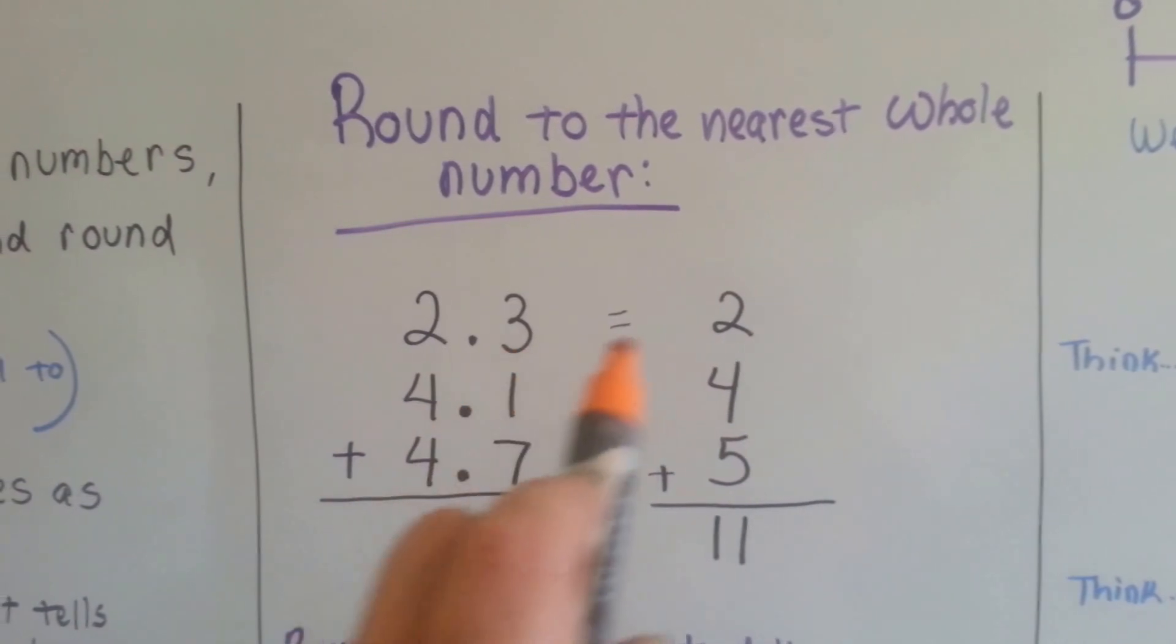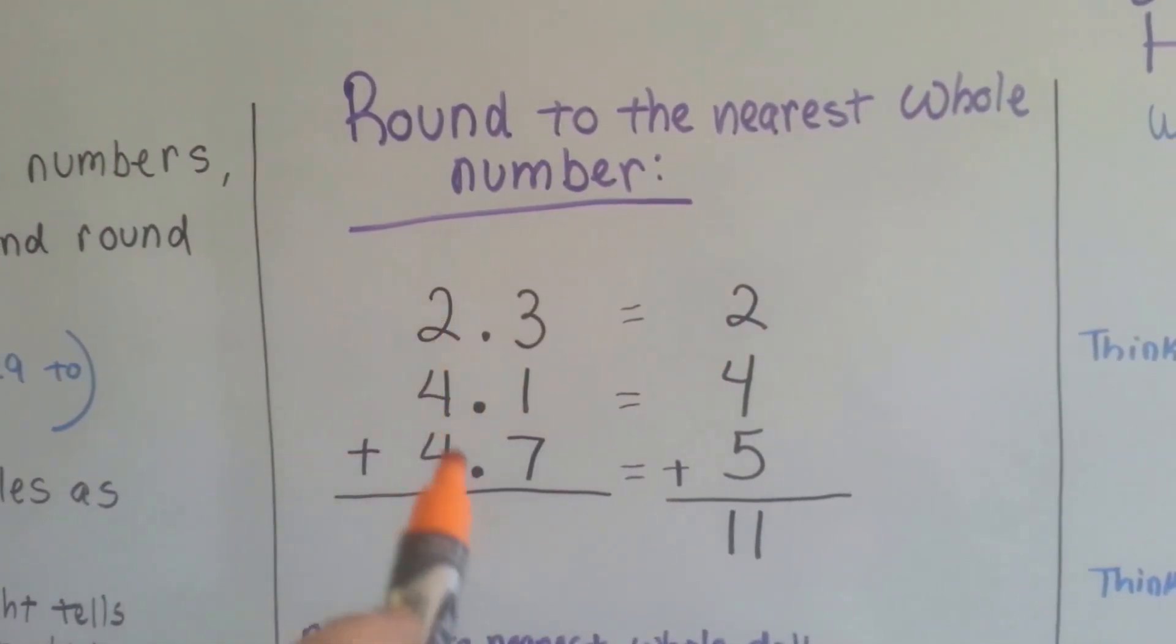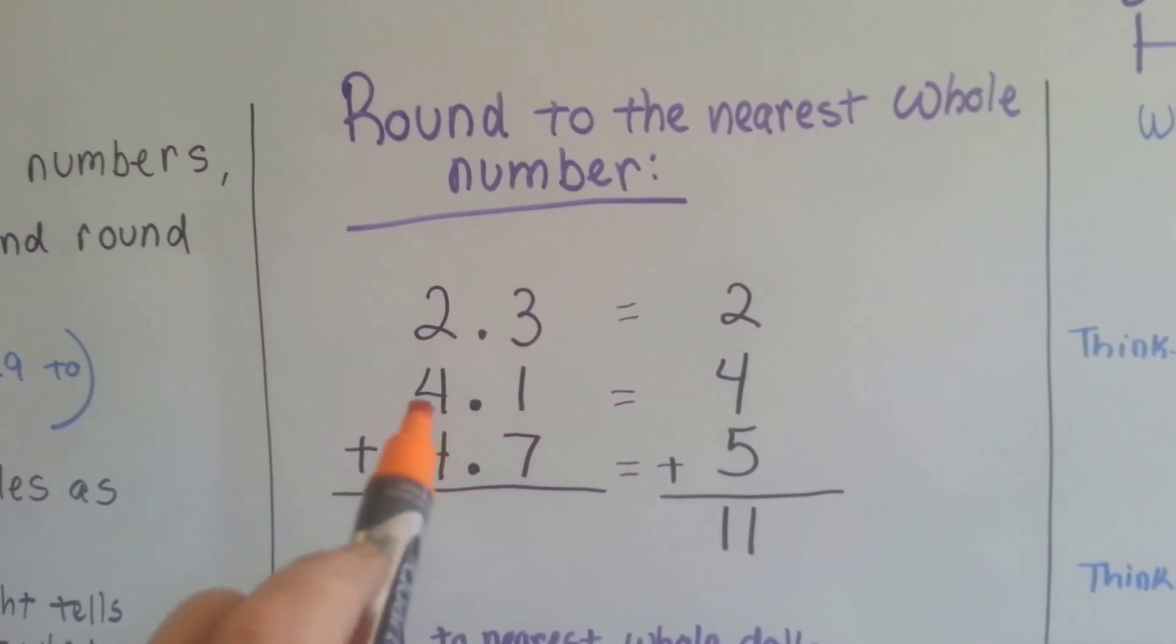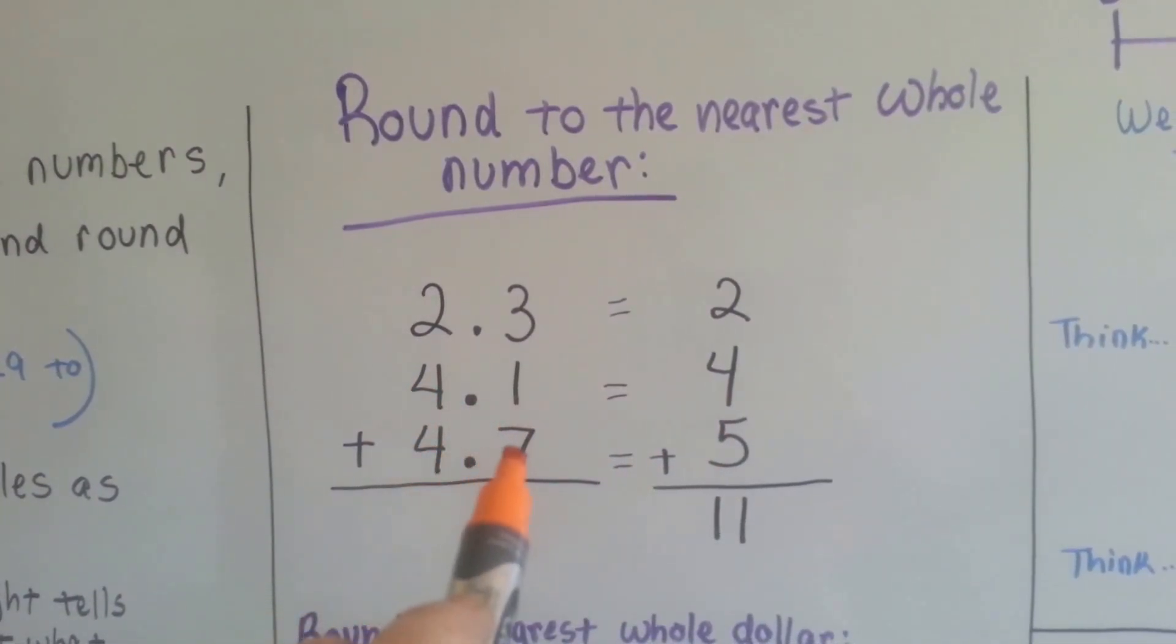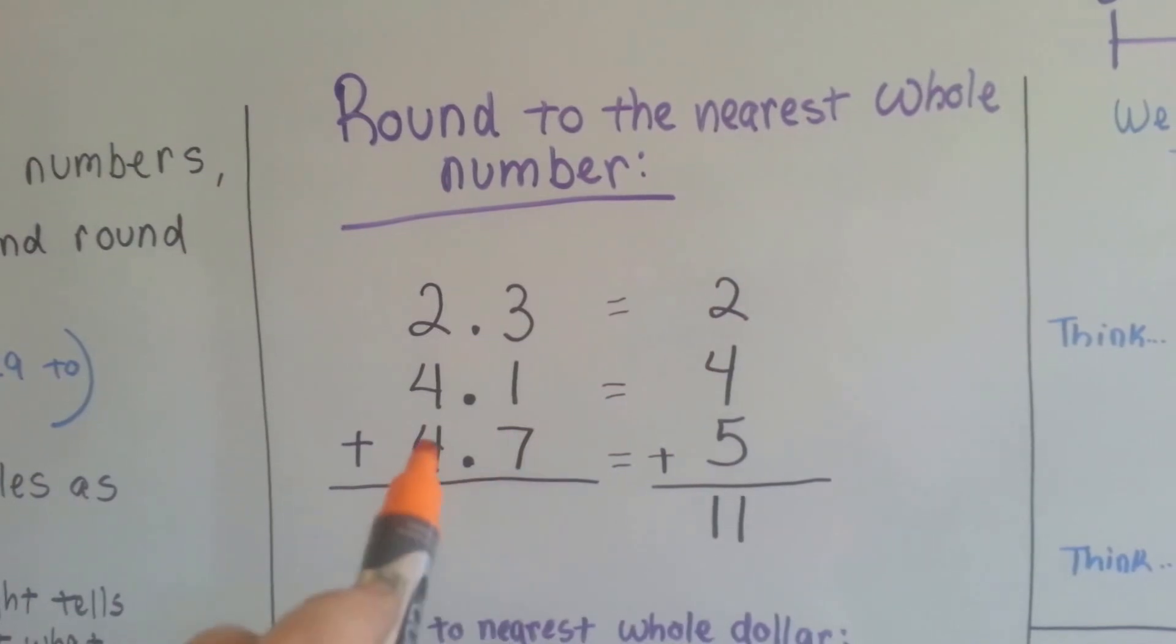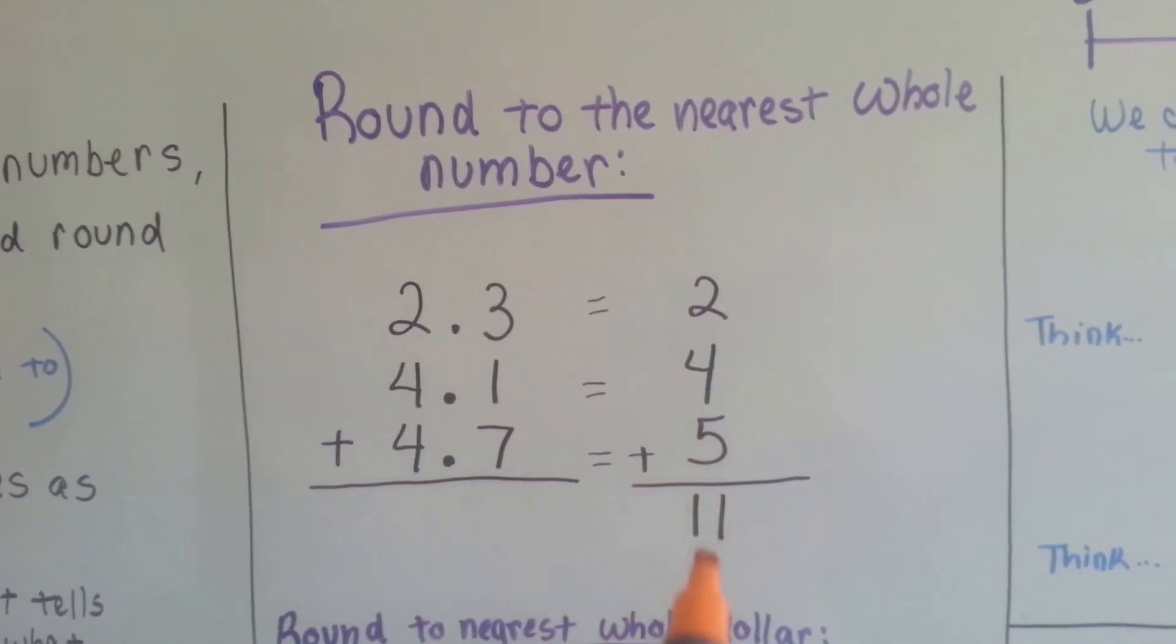2 and 3 tenths becomes 2 because the 3 tells the 2 to stay the same. 4 and 1 tenths stays 4 because the 1 tells the 4 to stay the same. And 4 and 7 tenths becomes 5 because the 7 tells the 4 to go up to the next number. We have 11.